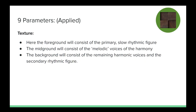Texture: The foreground will consist of the primary slow rhythmic figure. The mid-ground will consist of the melodic voices of the harmony, and the background will consist of the remaining harmonic voices and the secondary rhythmic figure.